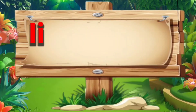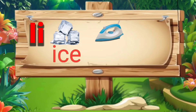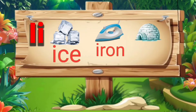I. I for ice: I, C, E — ice. I for iron: I, R, O, N — iron. I for igloo: I, G, L, double O — igloo.